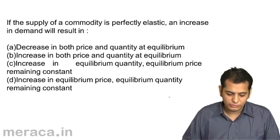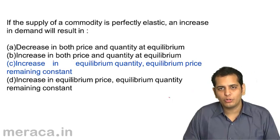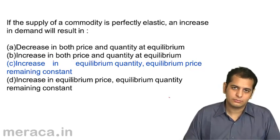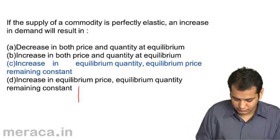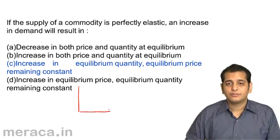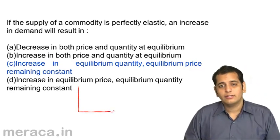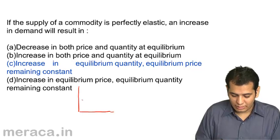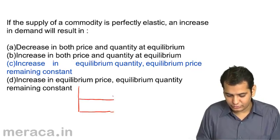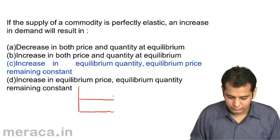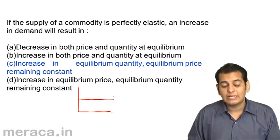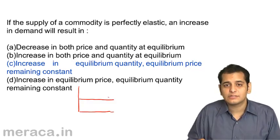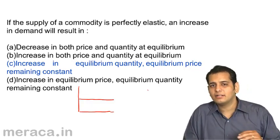The answer is: increase in equilibrium quantity where the equilibrium price remains constant. Let me explain how. On this graph, the x-axis represents quantity and the y-axis represents price. The question states that supply is perfectly elastic, which means the supply curve will be parallel to the x-axis.